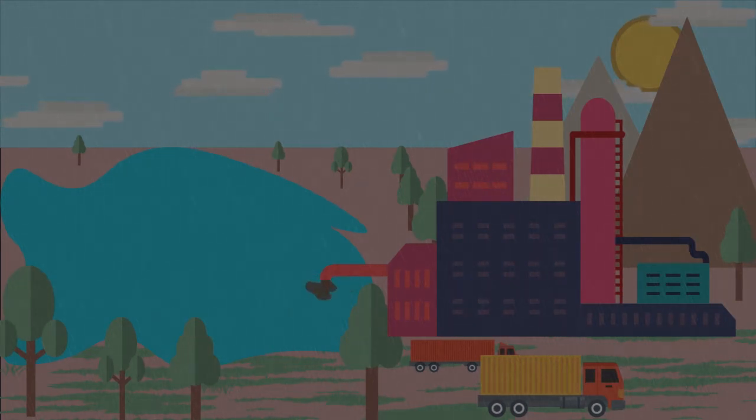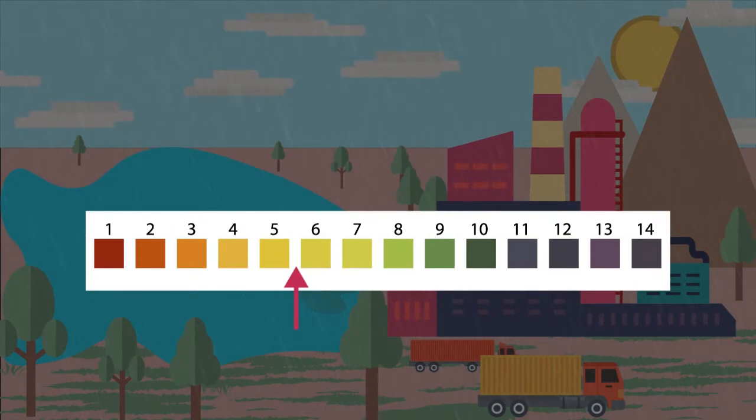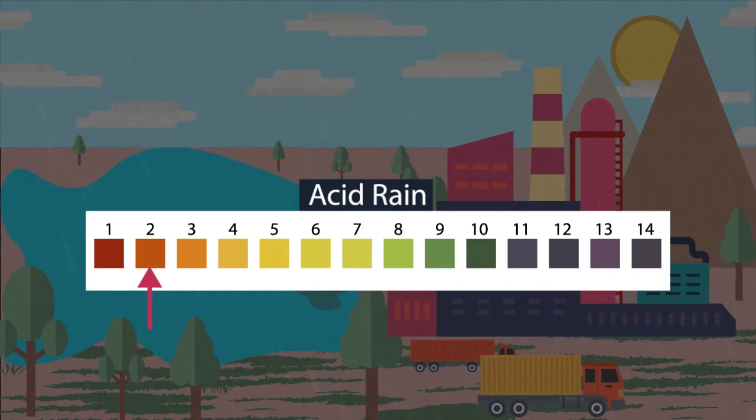Normal rainwater is slightly acidic. It has a pH of 5.6. If rainwater has a pH less than 5.6, then it is considered acid rain.